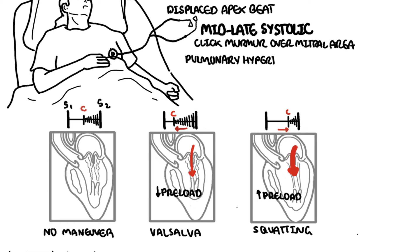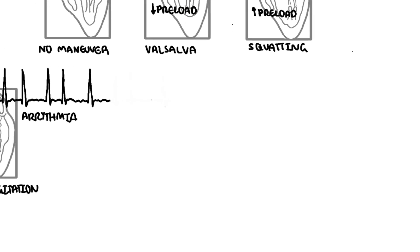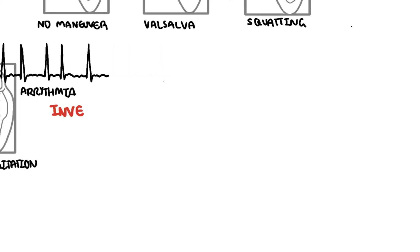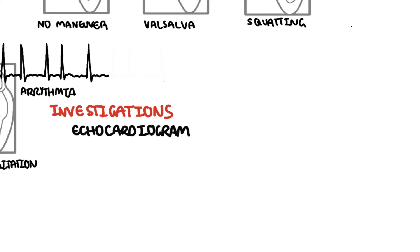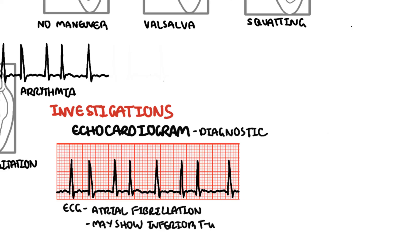Other clinical examination findings include pulmonary hypertension. Investigations to order include an echocardiogram, which is diagnostic and can assess severity. An electrocardiogram can identify possible atrial fibrillation and may show inferior T-wave inversion nonspecifically.